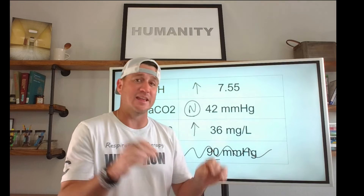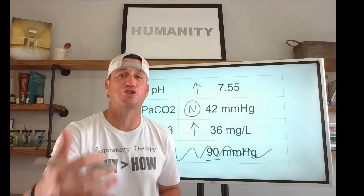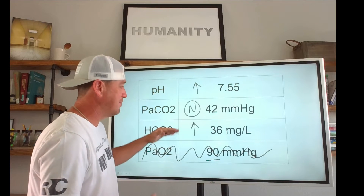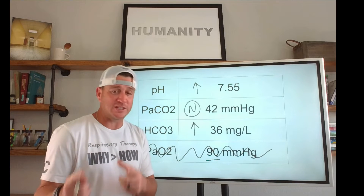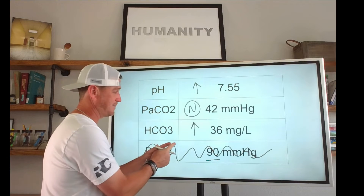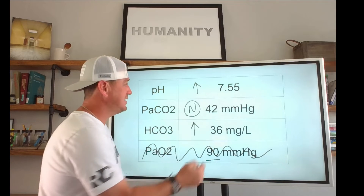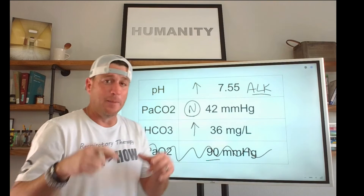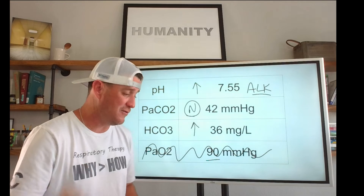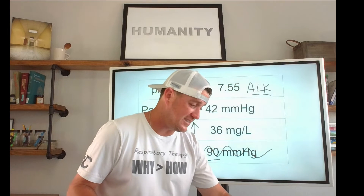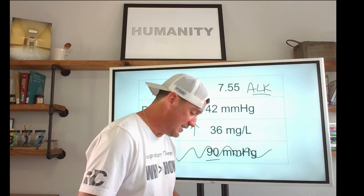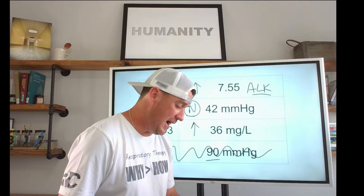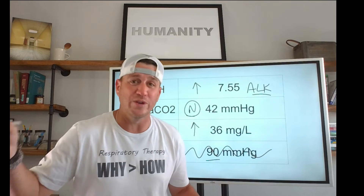If a patient is hypoxemic, then they will hyperventilate — that's true, but that's not what we're talking about here when we're talking about metabolic alkalosis and metabolic disturbances. Here's what's going to happen when you have this patient. Because the pH is alkalotic, the body's compensatory mechanism is to hypoventilate. Egan says this in Chapter 14 of the 12th edition: the expected compensatory response to a metabolic alkalosis is hypoventilation — CO2 retention.